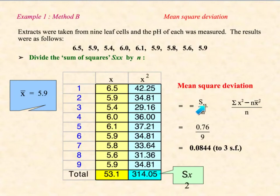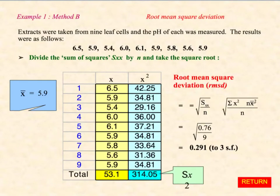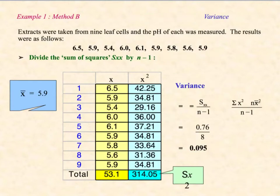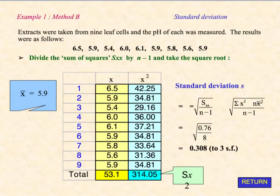Once we have SXX, we simply divide it by N as before, and it gives us the mean squared deviation — 0.0844. SXX over N, square rooted, gives us the root mean squared deviation, which is 0.291. If we divide SXX by N minus 1 it gives us the variance, and then if we square root that we get the standard deviation. One thing I'd suggest is to round off at the end as much as possible rather than during calculations.